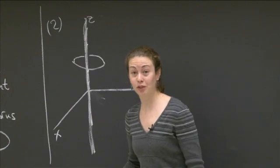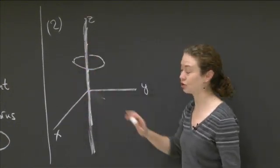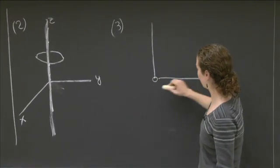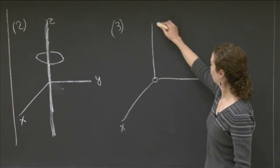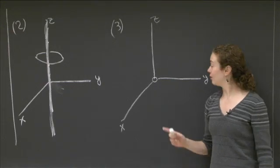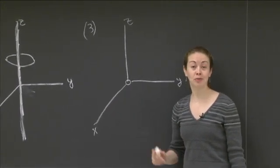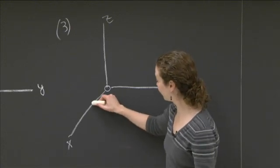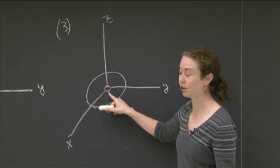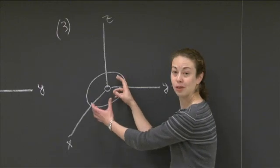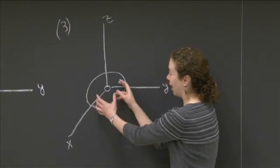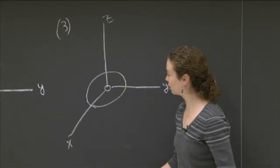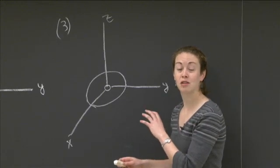Number 3 is a different situation. Instead of removing the whole z-axis, I just remove the origin. Our region is all of R3 except the origin. In 2-dimensional space, this was not simply connected, but in 3-dimensional space it is. If I take a curve sitting in the xy-plane that goes around the origin, I can keep this curve in 3-dimensional space, wiggle it around, and shrink it down to a point — the origin doesn't get in the way.